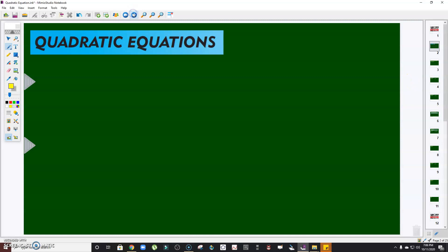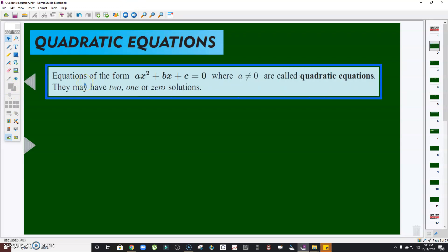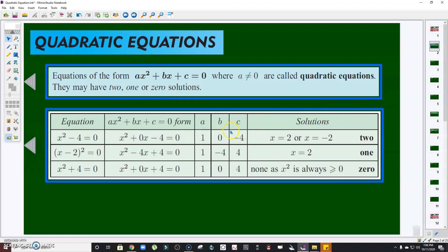Before we solve quadratic equations by extracting roots, let us define what is quadratic equation. Equations in the form ax² + bx + c = 0 where a is not equal to 0 are called quadratic equations. They may have 2, 1, or 0 solutions. The table here shows the three different scenarios. This is an example of quadratic equation with two solutions. The second one is a quadratic equation with one solution. And lastly, this is a quadratic equation with zero or no real solutions.